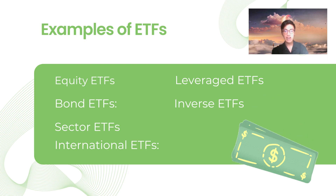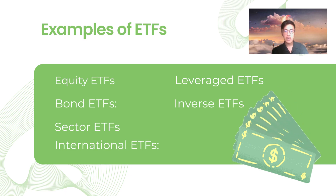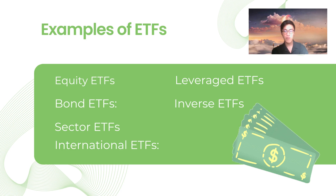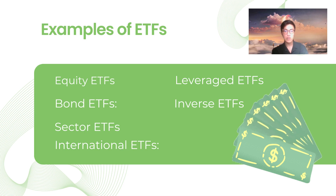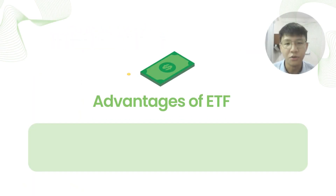Additionally, there are leveraged ETFs designed to amplify returns. Examples include SSO and TQQQ, which provide double or triple the daily return of the underlying index. On the other hand, inverse ETFs aim to profit from a downward market. Examples include SDS and QID, which provide the inverse or even double or triple the inverse daily return of the respective index.